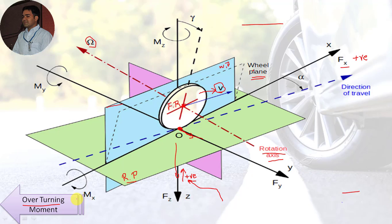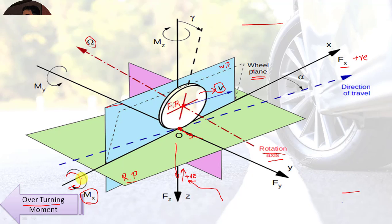The next term is overturning moment. This is the moment acting on the tire by the road, in the plane of the road and parallel to the intersection of the wheel plane with the road plane. It can be indicated by MX. This overturning moment is always in the road plane.